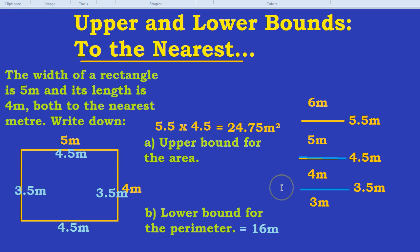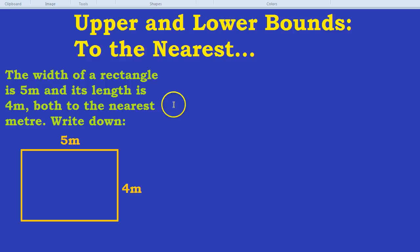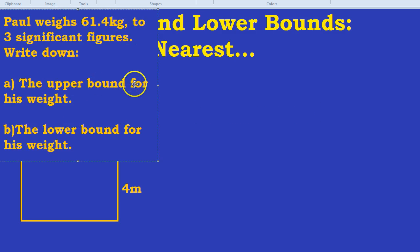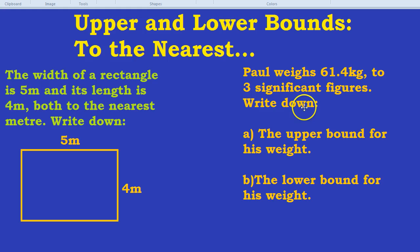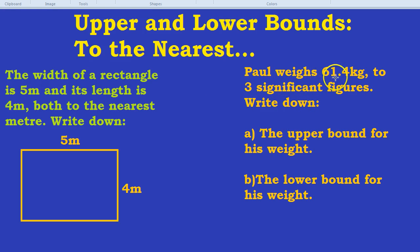Let's try one more quick question. Clear ourselves some space and maybe not that much space. Okay. Let's do the question on the right. Here we go. Paul weighs 61.4 kilograms to 3 significant figures. Write down the upper bound for his weight, the lower bound for his weight. Let's write that number out. 61.4. Now that's 3 significant figures. That basically means 3 numbers.